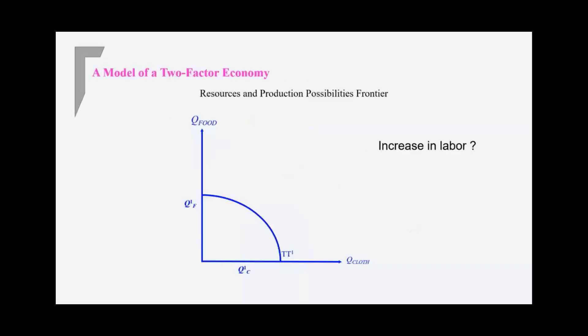Suppose this country produces cloth and food. Cloth is, let's say, labor-intensive, and food is land-intensive. Now, what happens when there's an increase in labor supply, production possibility frontier? There's a maximum of the two goods that you can produce, given your limited resources. So where it sits, this PPF, depends on your resource constraint.